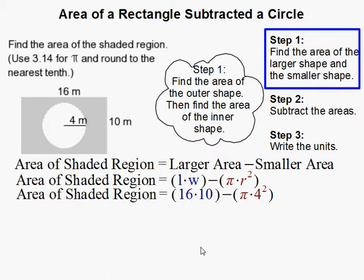Next we substitute. We have 16 as the length of the rectangle, 10 as the width of the rectangle, and 4 is given as our radius.